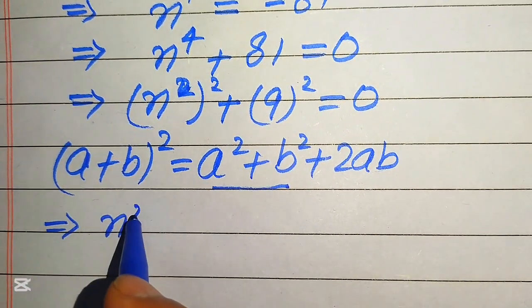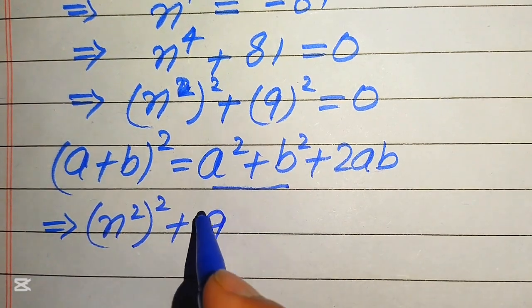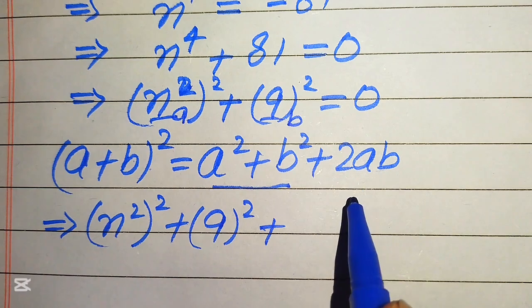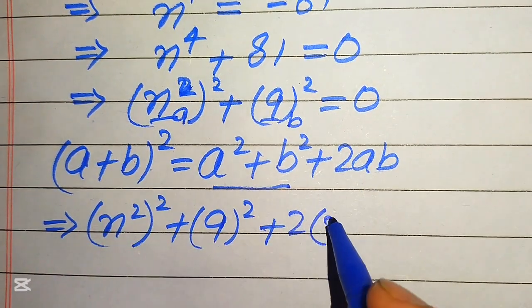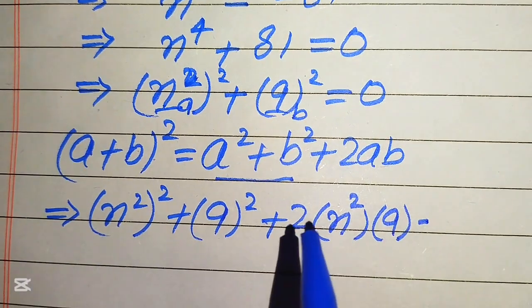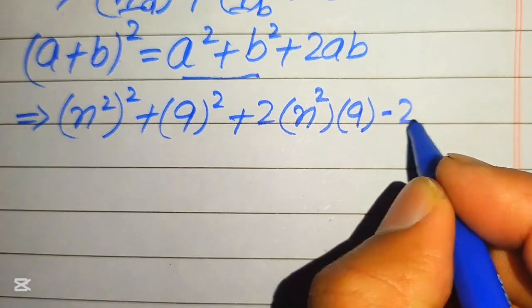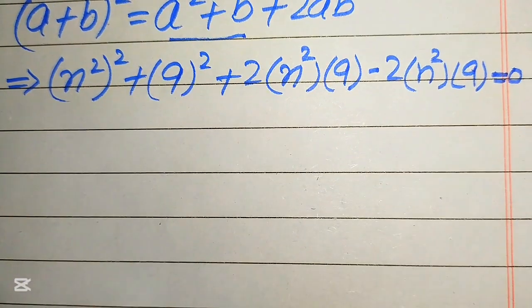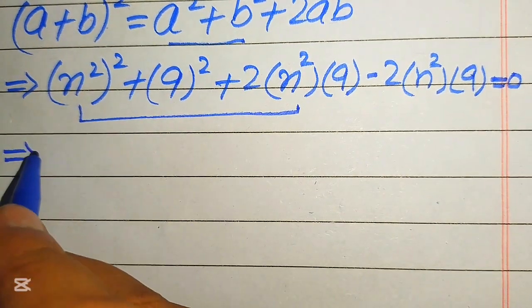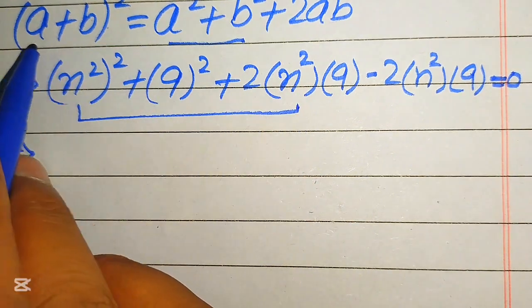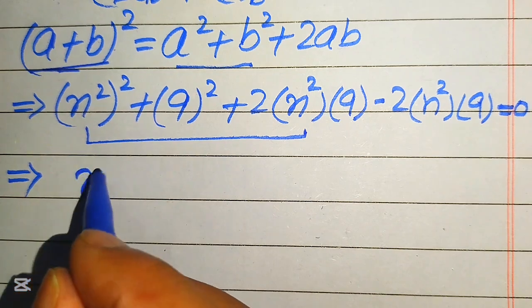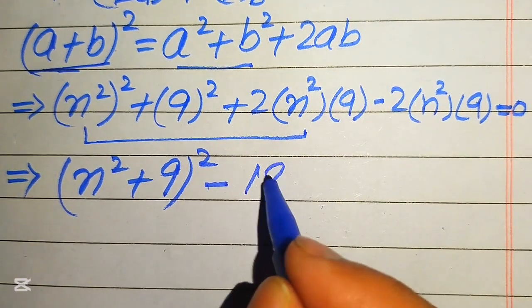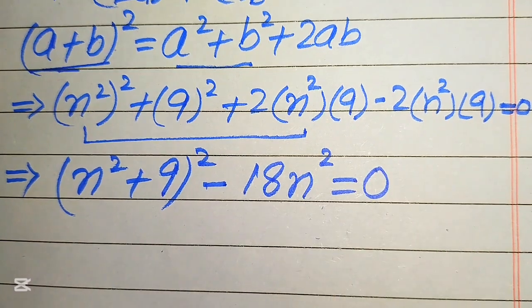After adding and subtracting the term, it is written as (n²)² + 9² + 2·(n²)·9 − 2·(n²)·9 = 0, where our a is n² and our b is 9. Focusing on the first three terms — a² + b² + 2ab — they form the perfect square formula, giving us (n² + 9)² − 2·9·n² = 0, which simplifies to (n² + 9)² − 18n² = 0.